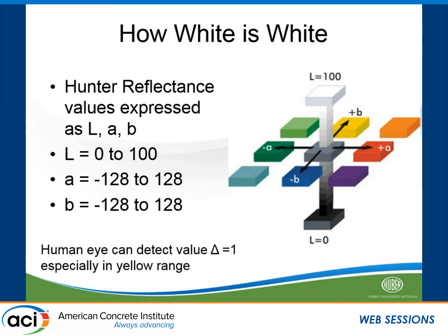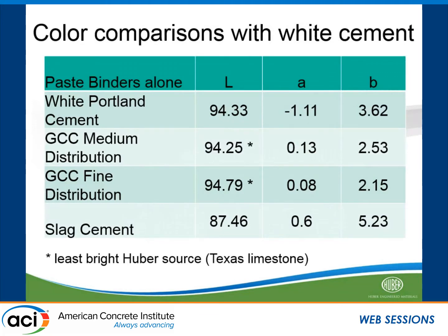The lower the B value is, the whiter it's going to look as you move towards the blue side. Here we started with just the paste binders alone: white Portland cement, a medium distribution ground calcium carbonate, and a fine. The median is about 10 micron and the fine is about 3 micron. You can see that it's just as white as your white Portland cement — it may even be a little bit wider to the eye because your B values and even your A values are much closer to that center axis. As a comparison, we think of slag cement as being a white material, but you can see by itself it's significantly less white, both in the L and especially in the B values.